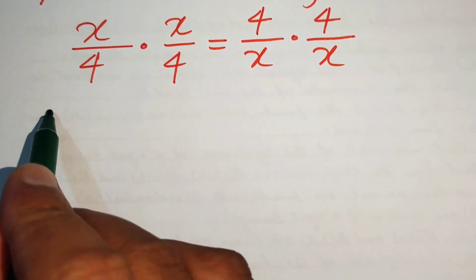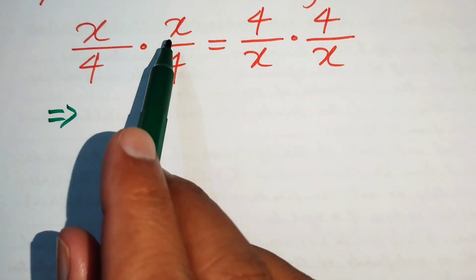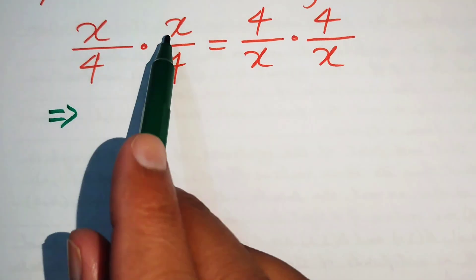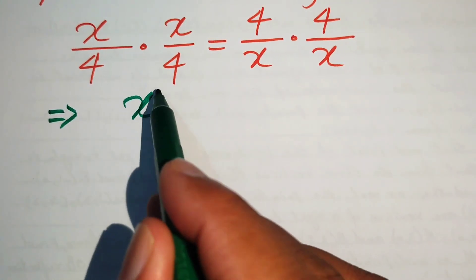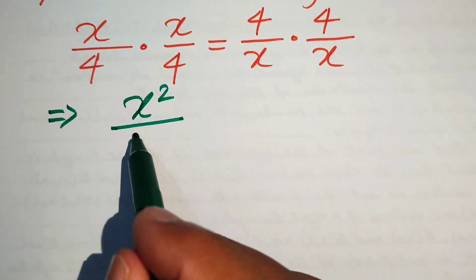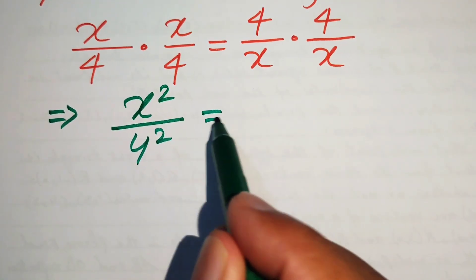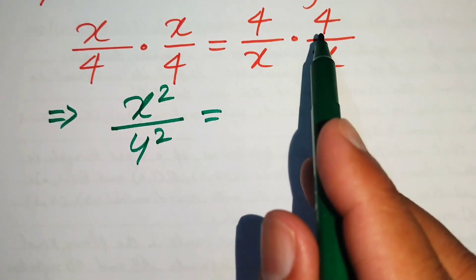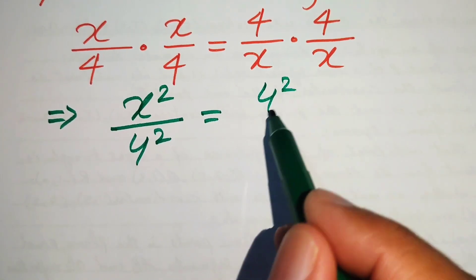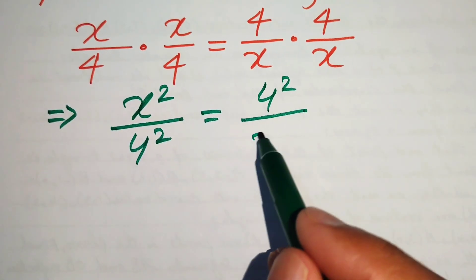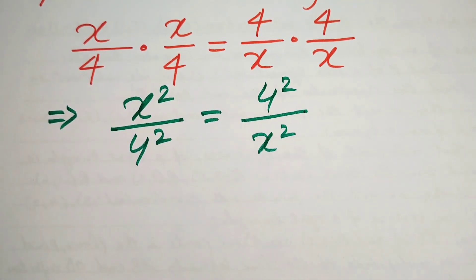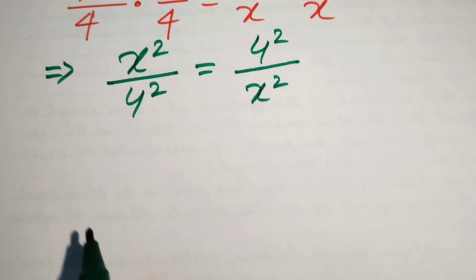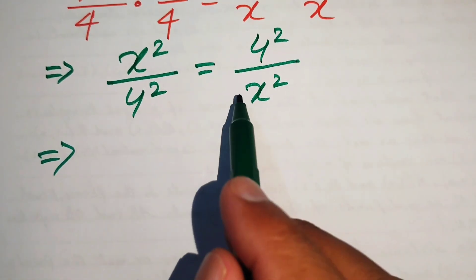The very first step we are going to do is multiply the numerator with the numerator and the denominator with the denominator. So we have x times x becomes x squared, and 4 times 4 becomes 4 squared. Similarly, on the other side, 4 times 4 is 4 squared and x times x becomes x squared.